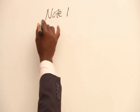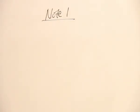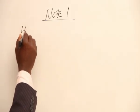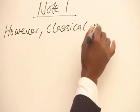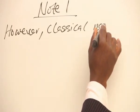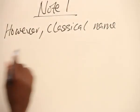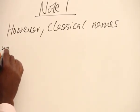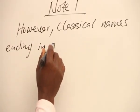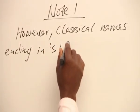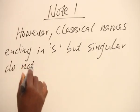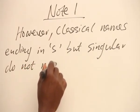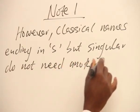Now, let's note Note 1. We want to remember the case of Charles's Bible. However, classical names ending in S, but singular, do not need another S.